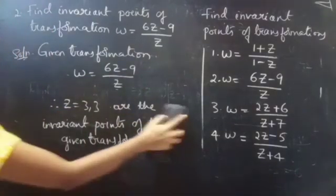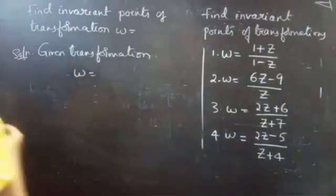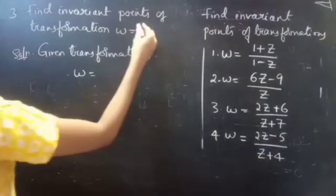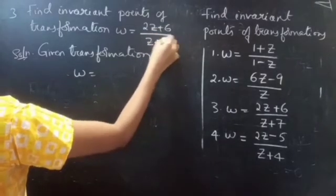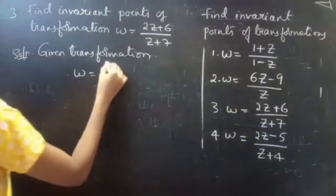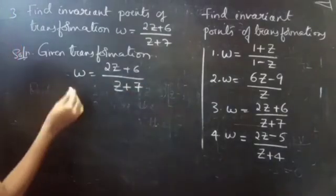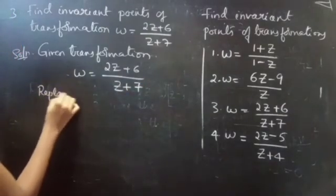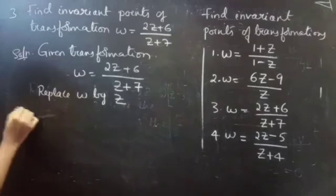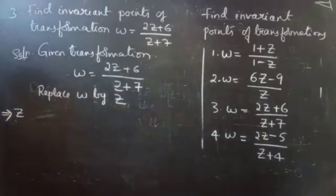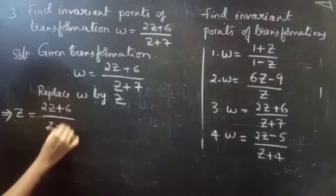Now coming to the third problem. Find the invariant points of omega equals to 2z plus 6 divided by z plus 7. Given transformation is omega equals to 2z plus 6 by z plus 7. Now we are going to replace omega by z. So this becomes z equals to 2z plus 6 divided by z plus 7.